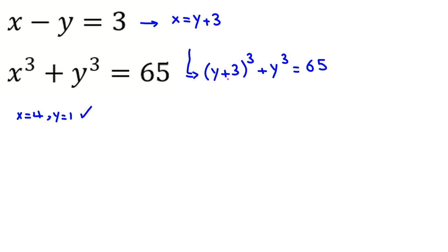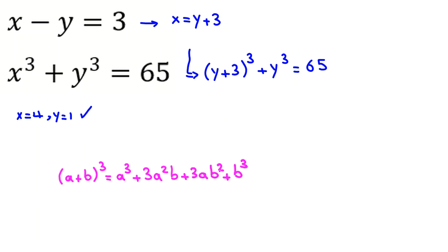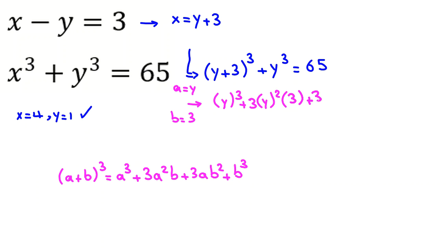Now here we have something plus something cubed. You should know the identity: if we have (a plus b) cubed, it equals a cubed plus 3a squared b plus 3ab squared plus b cubed. Applying this with a equal to y and b equal to 3, we get y cubed plus 3 times y squared times 3 plus 3 times y times 9 plus 27, plus y cubed.